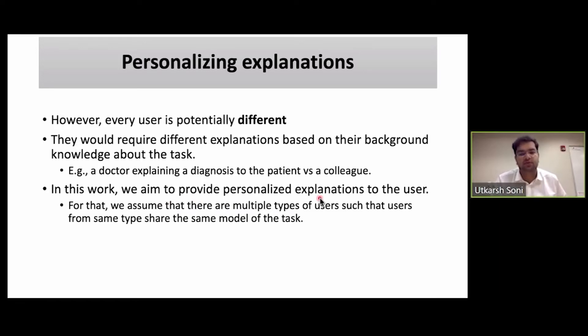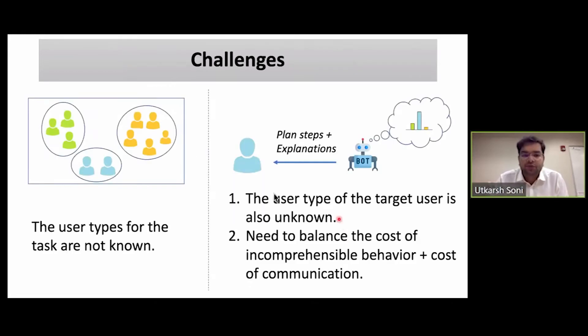So in this work, we aim to provide personalized explanations to the user and for that we assume that there are multiple types of users such that users from the same type would share the same or similar model of the task. The challenges in this work are that first of all, we don't know what are all the types of users that exist for the task and we won't know what their model is. And the second challenge is that when the target user comes to the robot for asking for explanation, we would have to infer its user type online and while providing explanation, we need to balance the cost of showing incomprehensible behavior with the cost of communication.